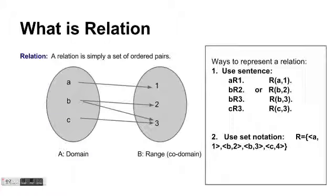Okay, first of all, what is relation? Actually, the relation is a simple concept. A relation is simply a set of ordered pairs. So, for example, if we have two sets, this guy and this guy, we just pair them together. A is linked to 1, B is linked to 2 and 3 at the same time, and C is linked to 3.